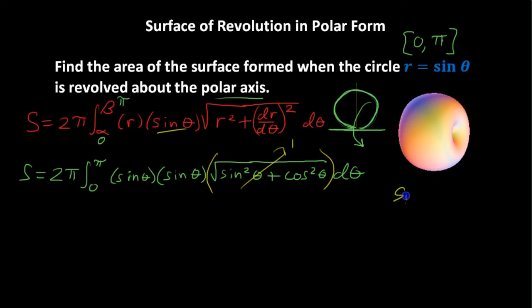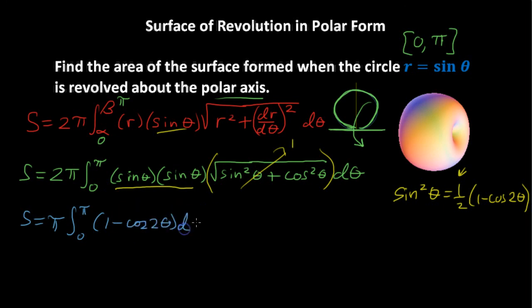Now, let's rewrite that real quickly. Sine squared of theta equals 1 half of 1 minus cosine of 2 theta. So I'm going to put that here, and I'm going to bring the 1 half out, multiply it out here, so 2 times 1 half is just 1. So we'll just have a pi out here. So let's rewrite that, and we'll get S equals pi times the integral from 0 to pi of 1 minus cosine of 2 theta d theta.